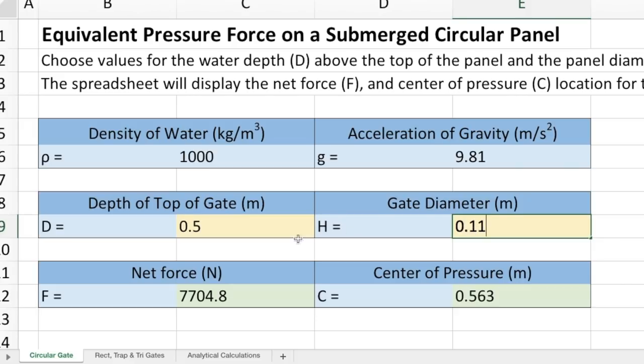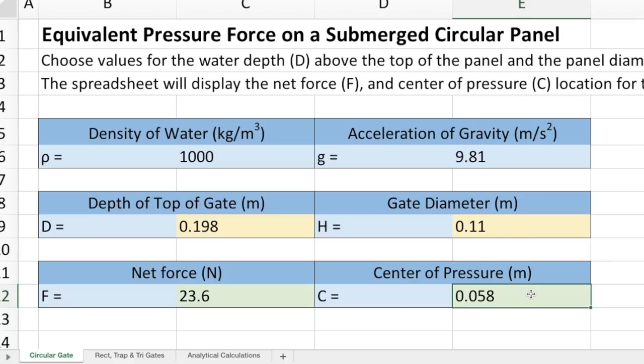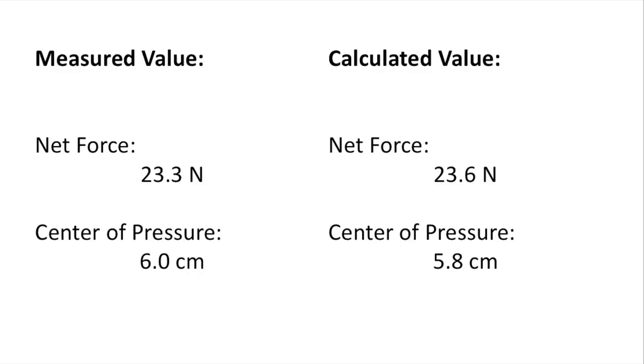and the water depth from the top of the panel, and it is 19.8 cm. The spreadsheet predicts an equivalent pressure force of 23.6 N, and it shows its location as being 5.8 cm below the top of the circular panel. As you can see, these values are in good agreement with our experimental measurements.